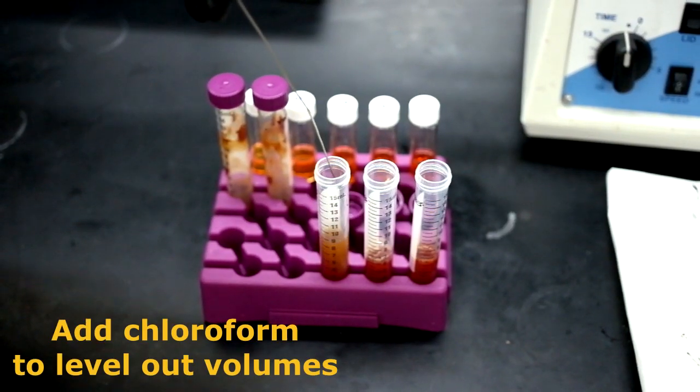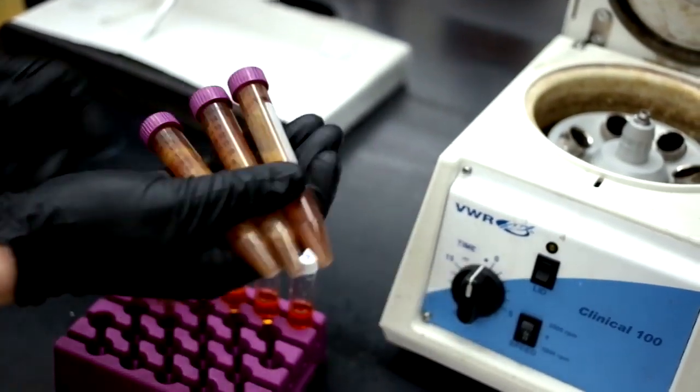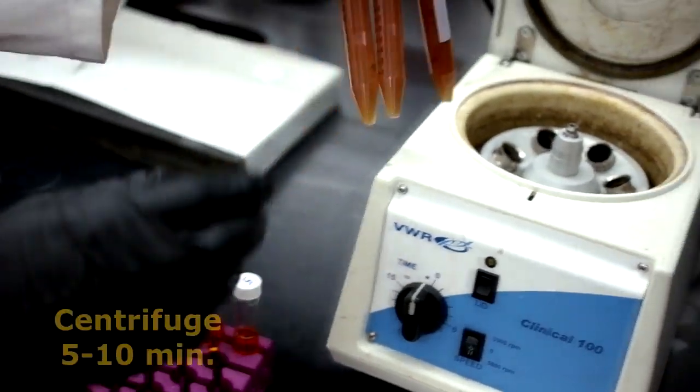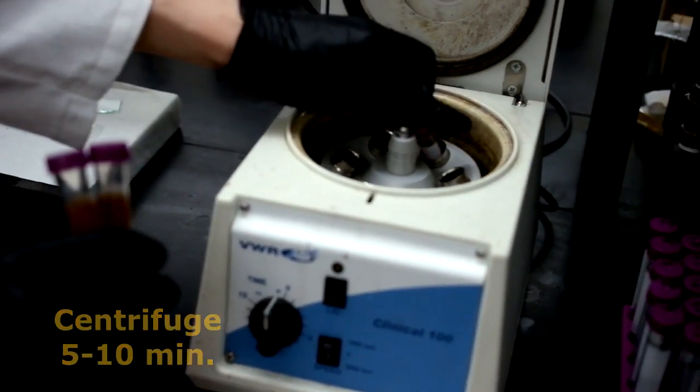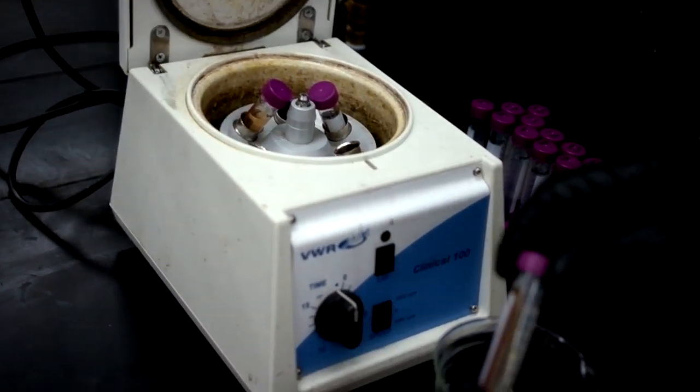Add chloroform to each of the test tubes until you have an equal volume in each. Shake to ensure the material is mixed properly and centrifuge for several minutes. You will notice that the precipitates have gathered on one side and a clear liquid remains.